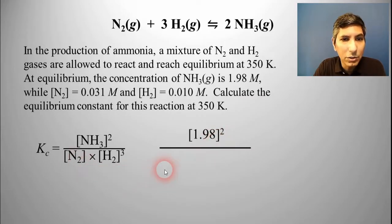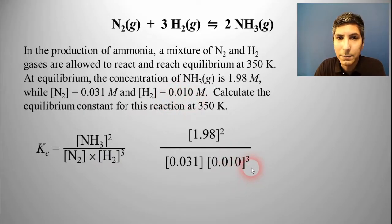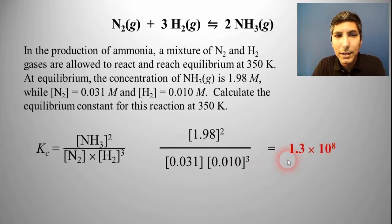In the denominator, we have N2. Its concentration is 0.031 molar. And then the concentration of hydrogen is 0.010 molar, and that's going to be cubed from our expression. You need a calculator, preferably a scientific calculator, to calculate all this. You'll find that KC is equal to about 1.3 times 10 to the 8th. That's a pretty big number. We'll talk about what the significance of that very big number means in our upcoming section.